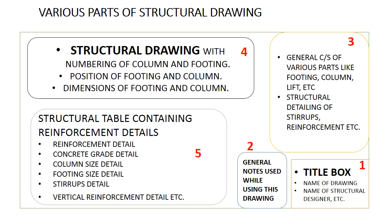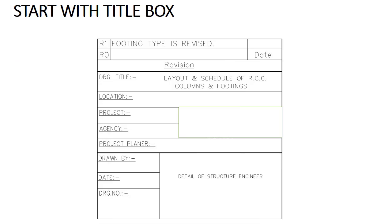So this is how to interact with a structural drawing while viewing it for the first time. Now this is the format of the title box you will see in a structural drawing, which is given in the right bottom of the sheet. First of all you have to read the drawing title. The drawing title contains the detail name of the drawing, like in this title box the drawing title is 'layout and schedule of RCC columns and footings,' which means this drawing contains details of only RCC footing and column.